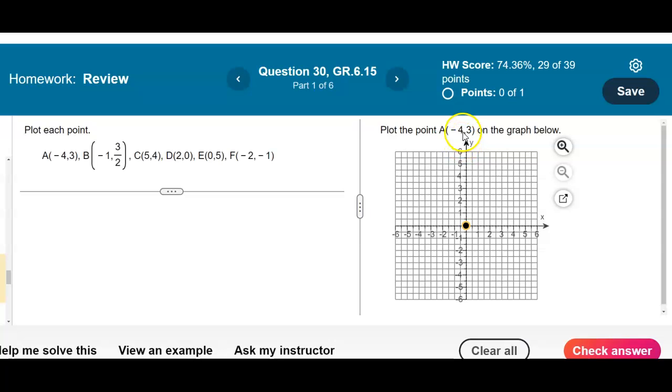So for the first ordered pair is negative 4, 3. The value of x is negative 4. So we're going to move over negative 4, but we're not going to plot the point yet because we need to now go up 3. So we're going to go up 3. And now let's check our answer.